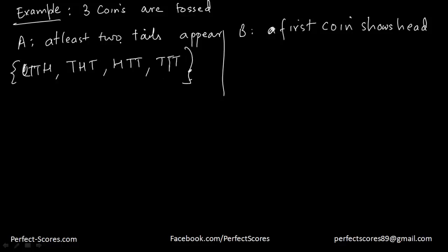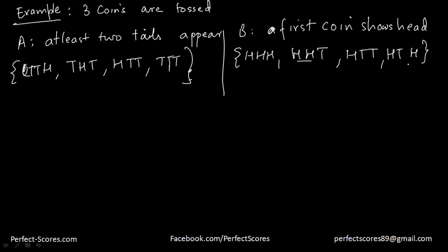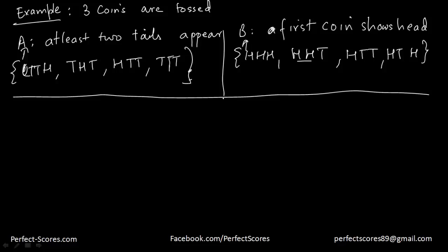All three tails is also considered as at least two tails because the word 'at least' is there. For event B, if the first coin shows head, it can be HHH, HHT, HTT, or HTH. These are the four cases that match event B. Now let's say event A and event B are happening simultaneously — I do not have any prior information about either event.